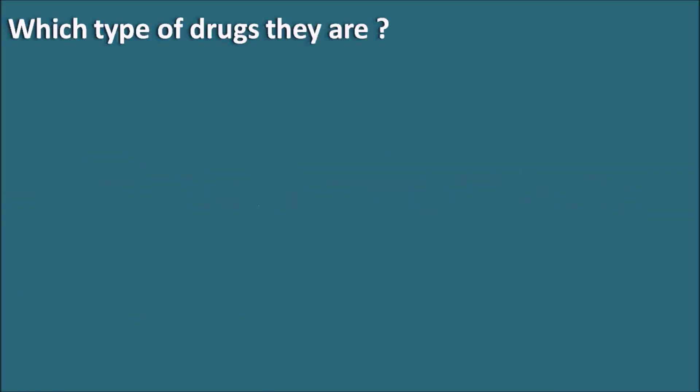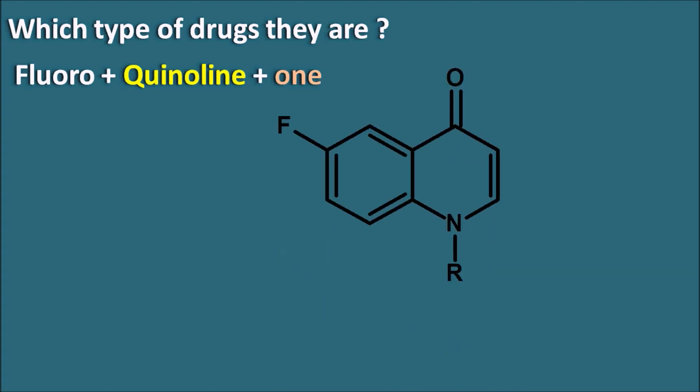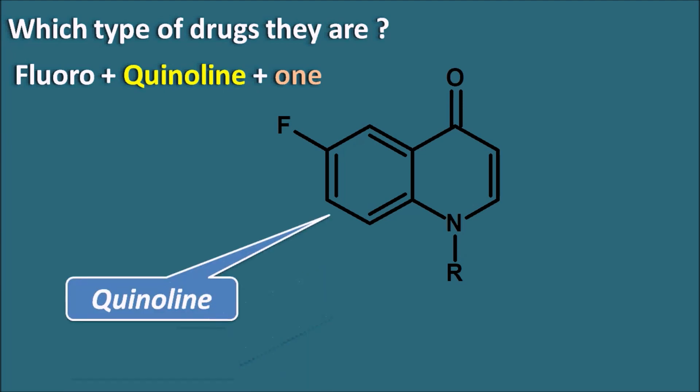Fluoroquinolones — which type of drugs are they? The name can be split into three parts: fluoro, quinoline, and one. The ring system they contain is the quinoline ring system, and we can write the general structure of fluoroquinolones with this quinoline ring system.